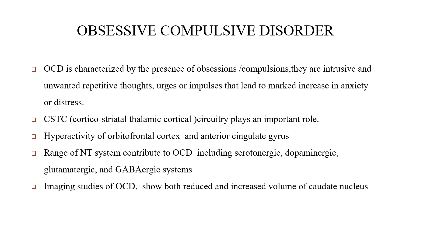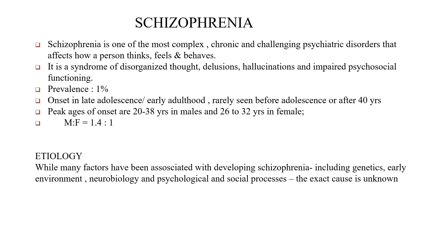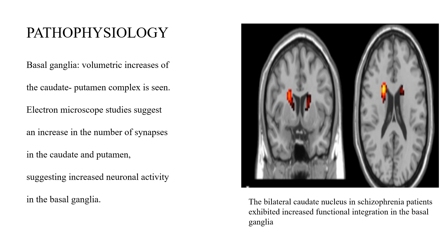Schizophrenia is one of the most complex, chronic, and challenging psychiatric disorders, affecting how a person thinks, feels, or behaves. It is a syndrome of disorganized thought, delusions, hallucinations, and impaired psychosocial functioning. Prevalence is about 1%, with onset in late adolescence or early adulthood. Peak age of onset is 20–38 years in males and 26–32 years in females. Etiology involves genetics, early environment, neurobiology, and psychological and social processes. Basal ganglia involvement includes volumetric increases of the caudate-putamen complex, and electron microscope studies suggest an increase in synaptic number in the caudate and putamen, suggesting increased neuronal activity in the basal ganglia.